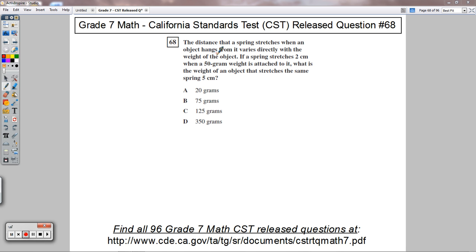This is question 68. It says the distance that a spring stretches when an object hangs from it varies directly with the weight of the object. If a spring stretches 2 centimeters when a 50 gram weight is attached to it, what is the weight of an object that stretches the same spring 5 centimeters?